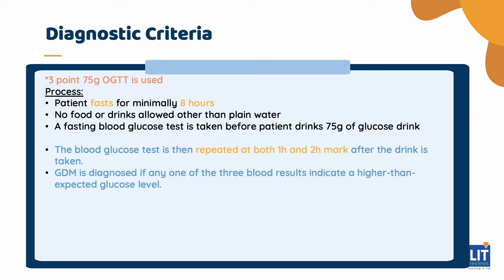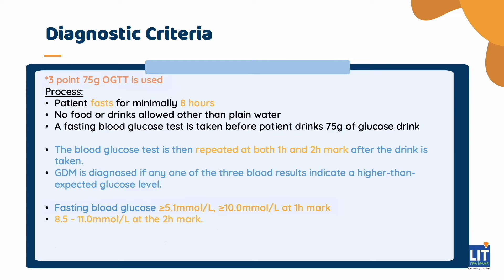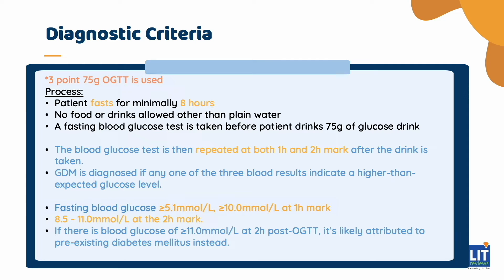GDM is diagnosed if any one of the 3 blood results indicates a higher-than-expected blood glucose level. The cut-offs are as follows: fasting glucose levels of more than 5.1, more than 10 at the 1-hour mark, and 8.5 to 11 at the 2-hour mark. If there is a blood glucose of more than 11 at the 2-hour post-OGTT, it is likely attributed to pre-existing diabetes mellitus instead.